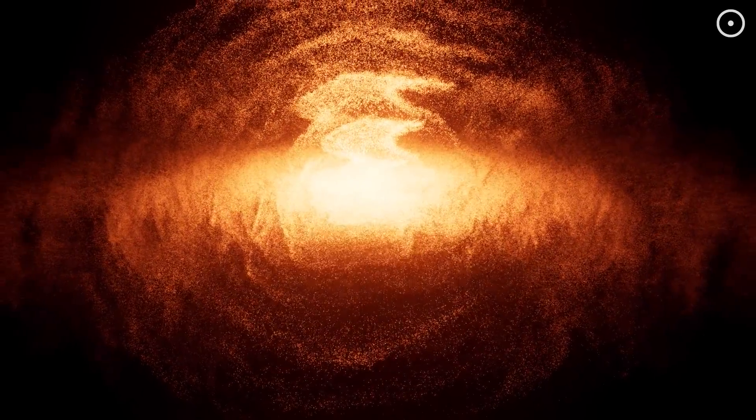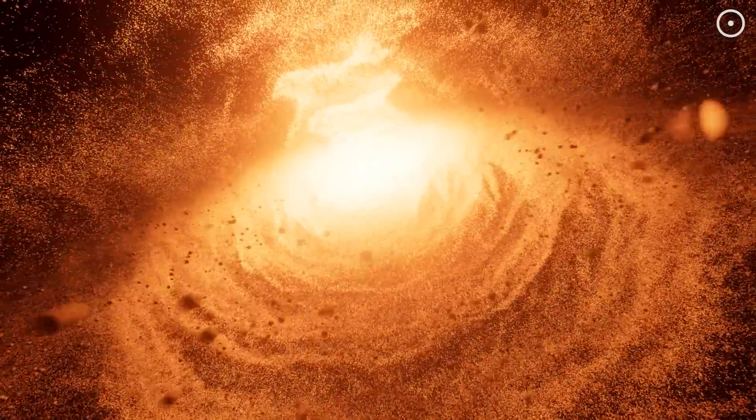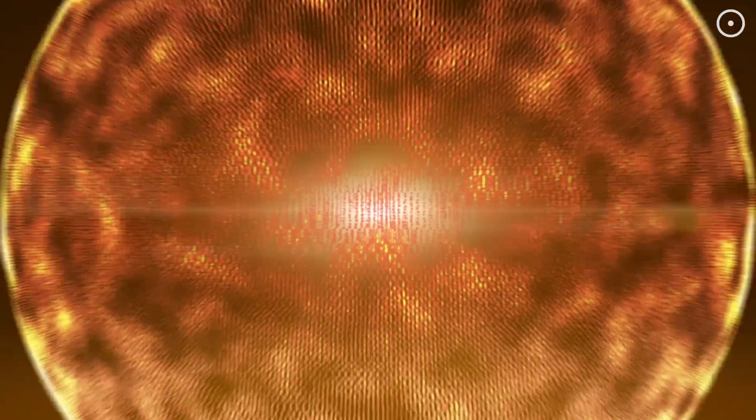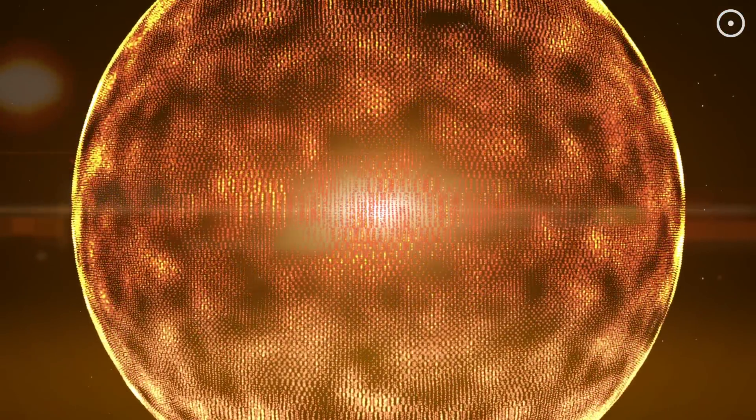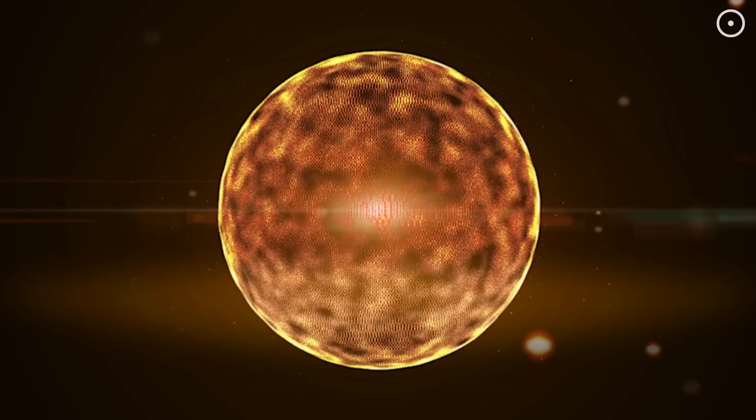Over time, the black hole continues to grow as it feeds on the surrounding material. As the black hole gets larger, it consumes more and more of the star's outer layers. Eventually, the star's outer layers become too thin to support themselves. When this happens, the quasi-star can't maintain its structure, and the outer layers collapse into the black hole.